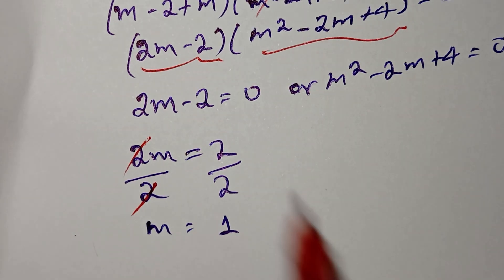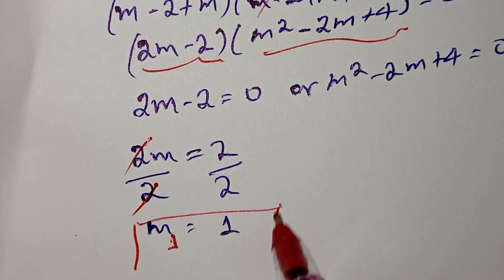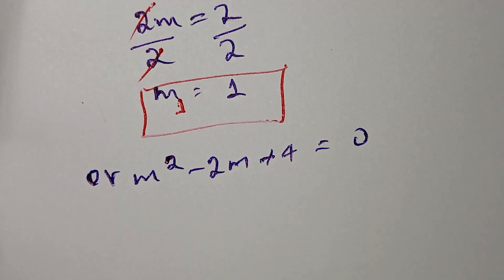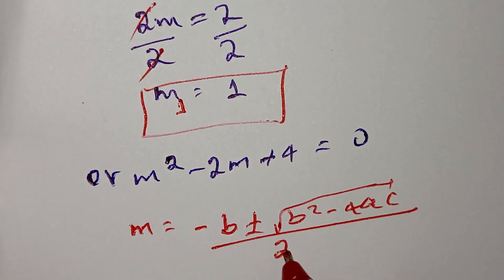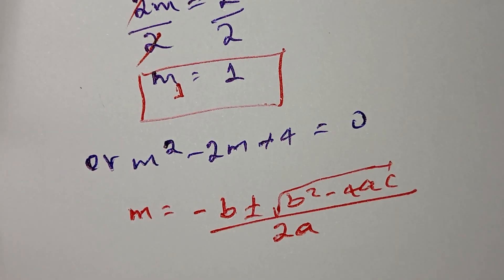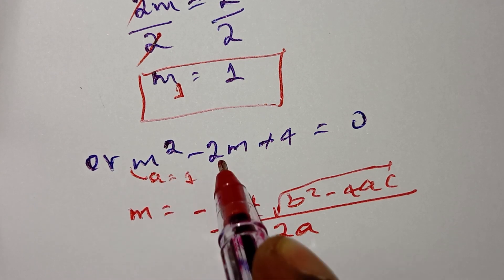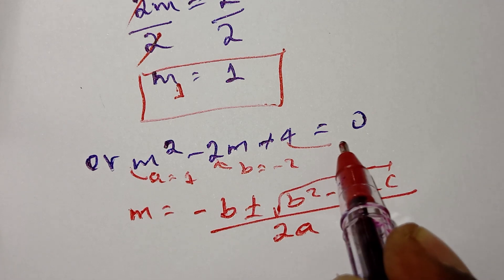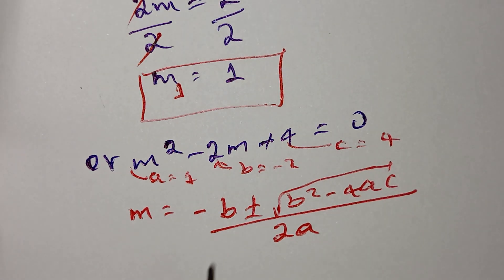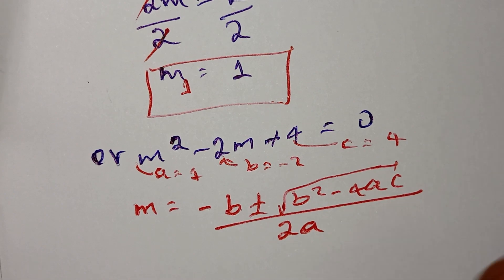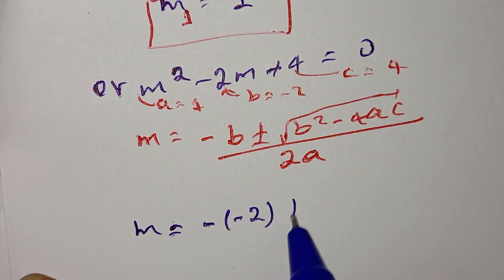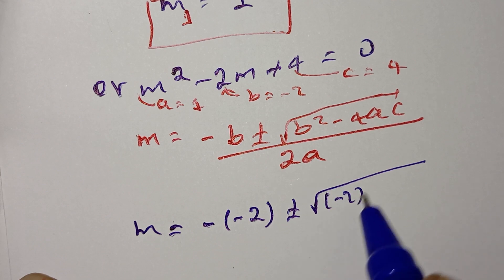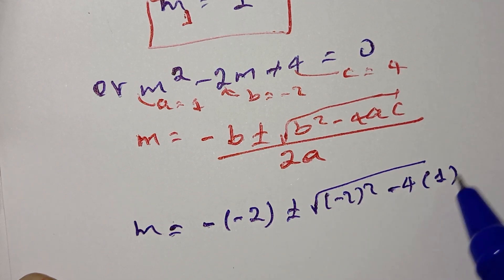So the first answer is m₁ equals 1. The second equation is solved by the quadratic formula: m equals [minus b plus or minus square root of (b² minus 4ac)] over 2a. Here a equals 1, b equals minus 2, and c equals 4.